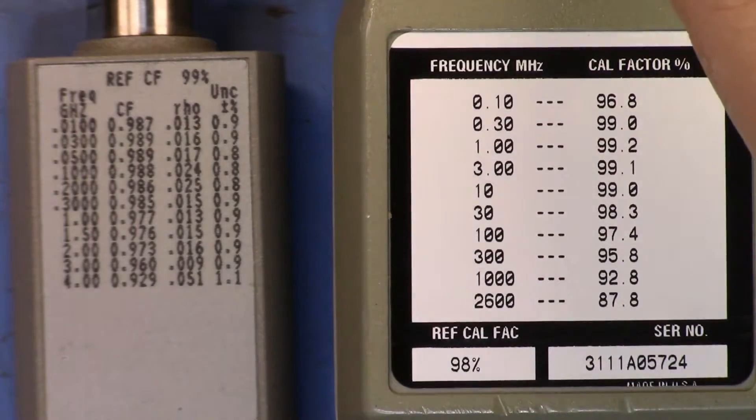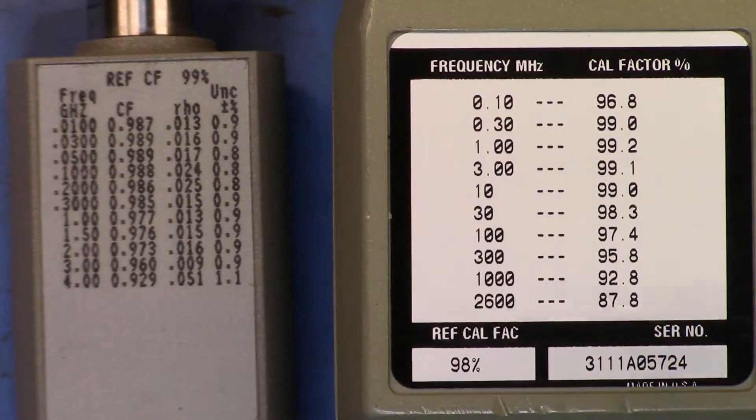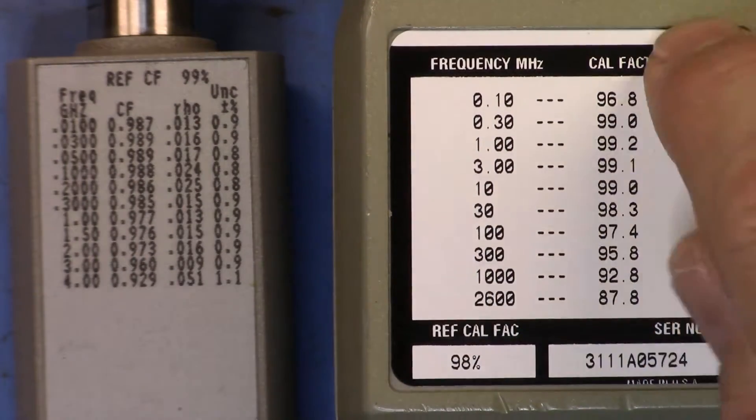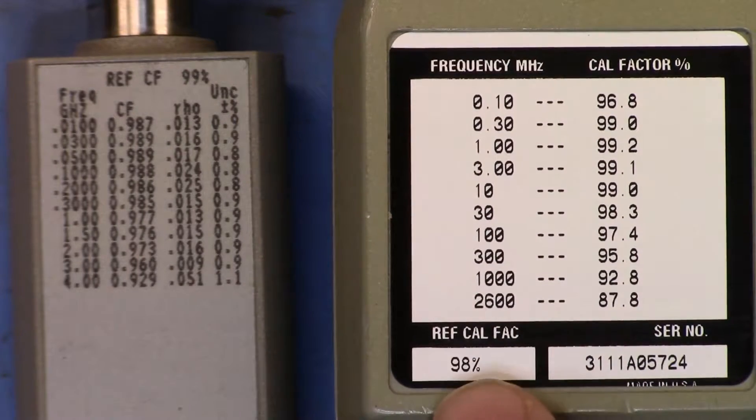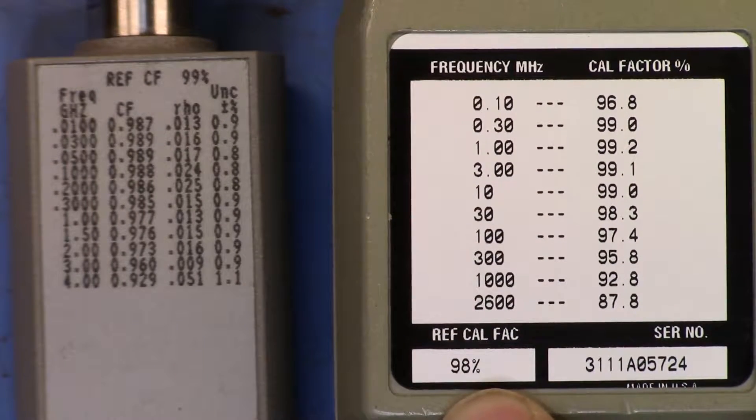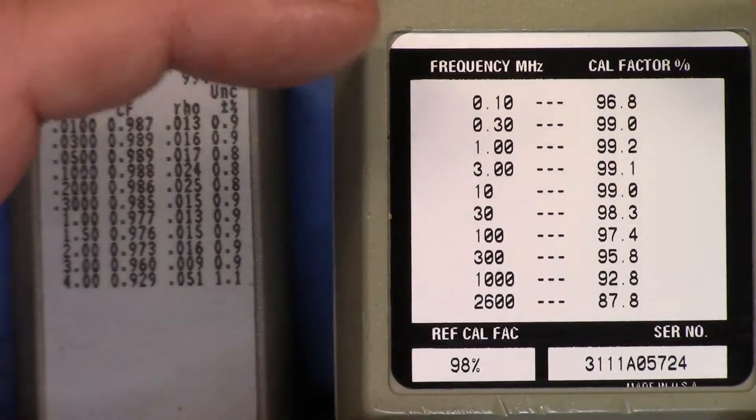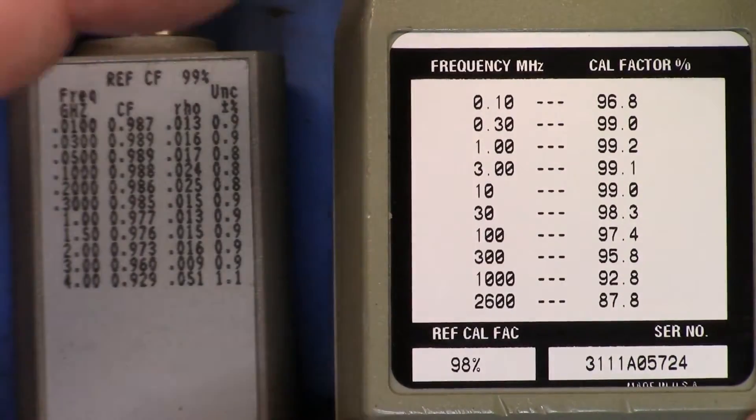In the case of the 11722A, the frequency sets that you put into the measurement receiver are these specific values here. You can see the new values that they have running up and down here, and you can see I have a newly set reference value.